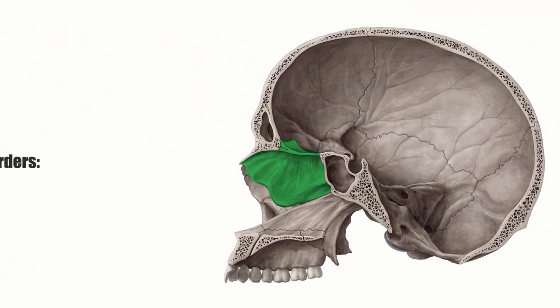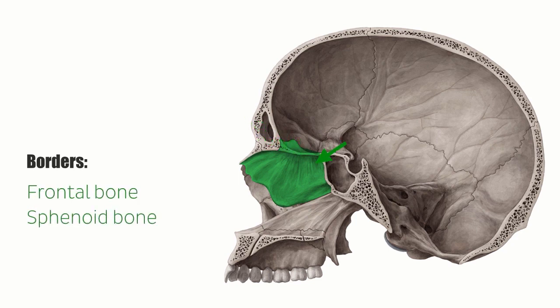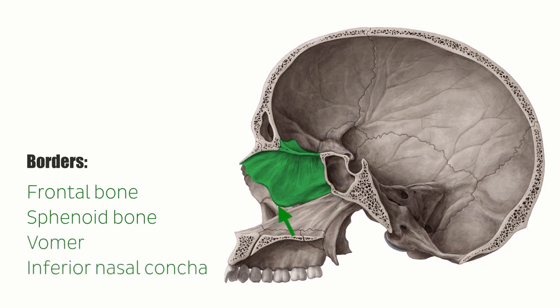Because of its central location within the skull, the ethmoid bone comes in contact with 15 other bones of the skull. The most important borders are anteriorly to the frontal bone, posteriorly with the sphenoid bone, and inferiorly to the vomer and inferior nasal concha.